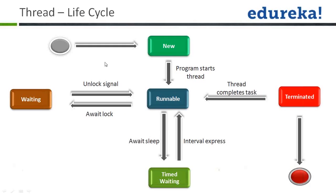Now let's see the lifecycle of a thread. First, your program starts the thread. Using the Runnable interface, you make the thread wait using the wait function and it will be unlocked. You can send your thread to sleep — it will sleep for some time and again start executing. When the task is completed, the thread gets terminated. So in the lifecycle, a thread can wait, be put to sleep, and when its work is finished it will finally die — it gets terminated.